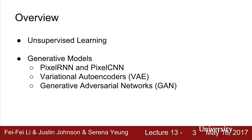We're going to switch gears and take a look at unsupervised learning today. In particular, we're going to talk about generative models, which is a type of unsupervised learning. We'll look at three types: pixel RNNs and pixel CNNs, variational autoencoders, and generative adversarial networks.